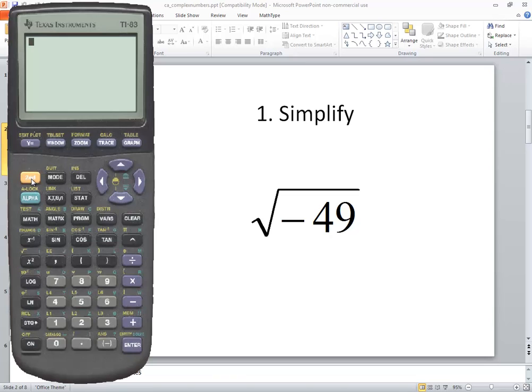If I type this in, one of two things will happen. So I'll do second x squared for the square root and I'll put in negative 49, closing parentheses and press enter. And in this case we get an error, non-real answer. You might have got that or you might not have. I'll just go ahead and quit.